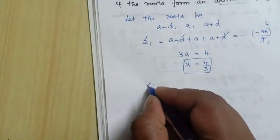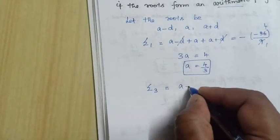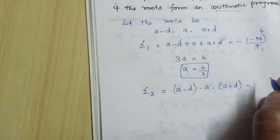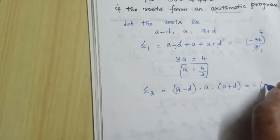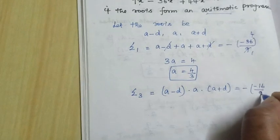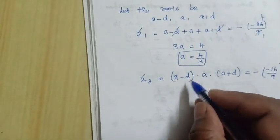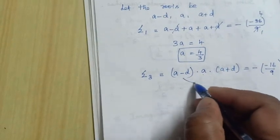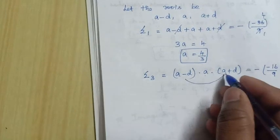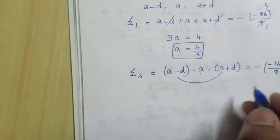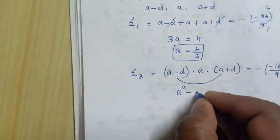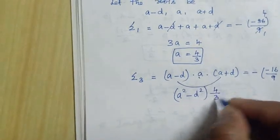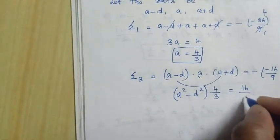Next, consider the product of the roots: (a minus d) times a times (a plus d) equals minus d by a, that is minus of minus 16 divided by 9. Combining (a minus d)(a plus d) gives a squared minus d squared. Substituting a equals 4 by 3, we get a squared equals 16 by 9.